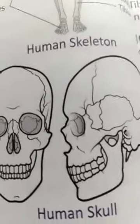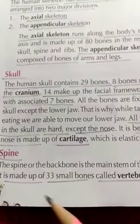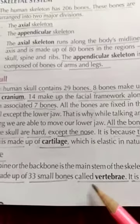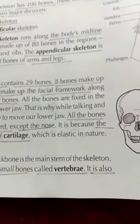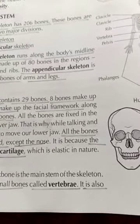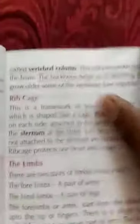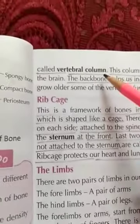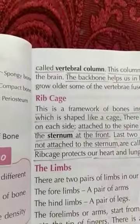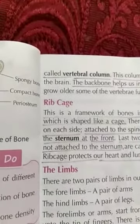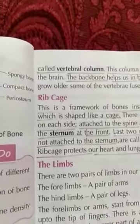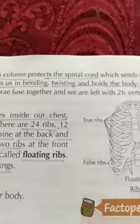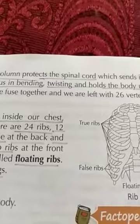Next, let us come to the spine. Our spine is made up of 33 small bones called the vertebrae, also known as the vertebral column. The vertebral column protects the spinal cord. Our backbone also helps us in bending, twisting, and holds the body upright.